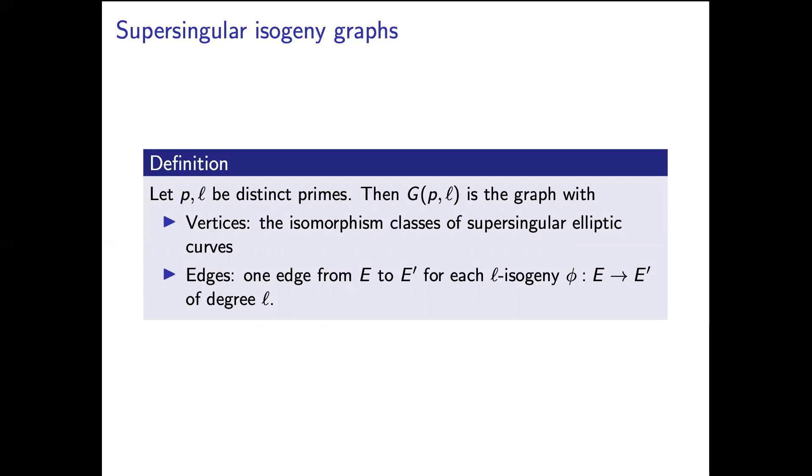So let's let p and ℓ be distinct primes. p is the characteristic of the field our curve is defined over and ℓ you should think of as some small constant prime like 2 or 3. And the vertices of this graph are the isomorphism classes of supersingular elliptic curves, say represented by their j-invariants. Then the edges in this graph come from ℓ-isogenies. So we'll have one edge between E and E' for every degree ℓ isogeny between these two curves.